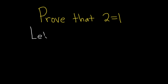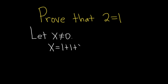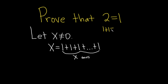We'll start by introducing a variable x, because x is typically a variable often used in mathematics. Let's assume that x is not equal to 0. Then we're going to say that x is equal to 1 plus 1 plus 1 plus dot dot dot plus 1, where there are x copies of 1. So we have x ones. As a concrete example, if you have 1 plus 1, you have 2 ones and you get 2. If you have 1 plus 1 plus 1, you have 3 ones and you get 3. So if you have x ones, you get x. Everything here is okay.